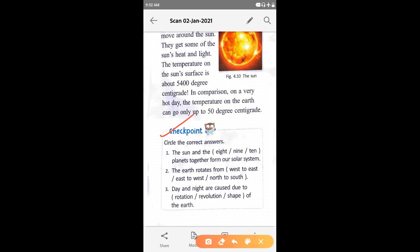The earth rotates from west to east, east to west, north to south. Earth rotates west to east. Third, day and night are caused due to rotation, revolution, shape of the earth.